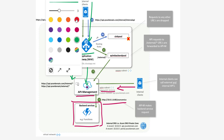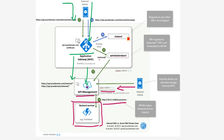We don't want everything exposed. We have certain external-type APIs for external partners, and certain internal APIs we don't want exposed to external vendors or third-party providers. That's why we configure path-based routing on the application gateway — only requests to a specific path are forwarded to the API management backend. If the path doesn't match, the request is sent to the sink backend pool, meaning those requests are blocked.